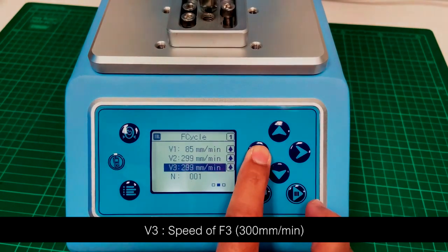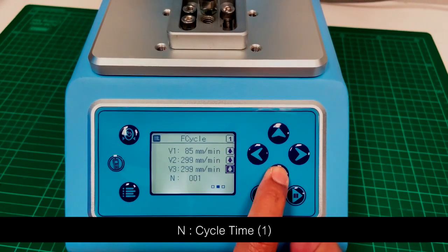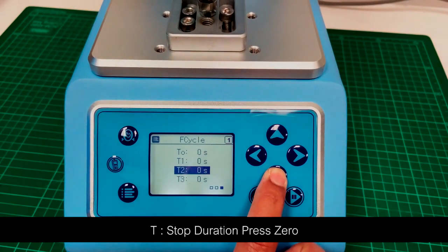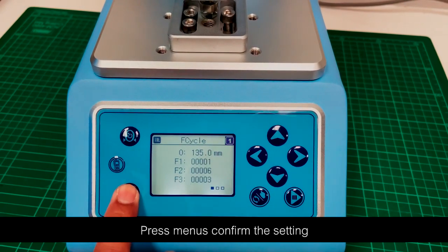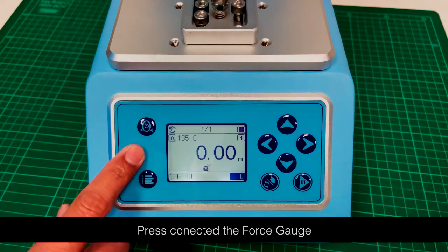V3: speed of F3, 300 mm per minute. N: cycle time. T: stop duration. Press 0, press menus to confirm the setting and return. Press connected the force gauge.